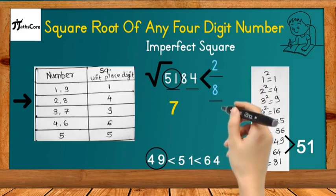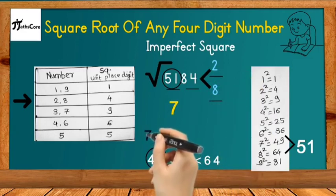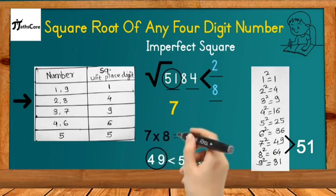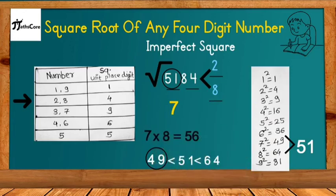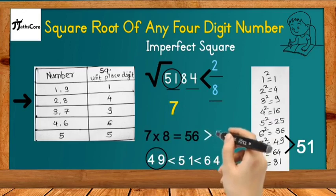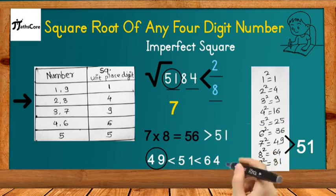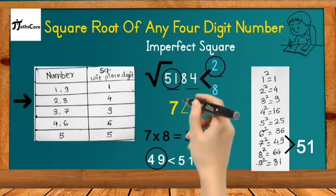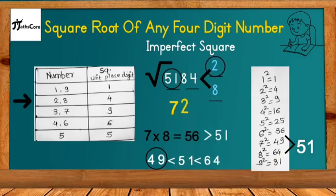Now we finalize between 2 and 8 for the unit place. Multiply 7 by its consecutive number 8: 7 × 8 = 56. Compare 56 with 51: since 56 > 51, meaning 51 < 56, we select the smaller number between 2 and 8, which is 2. So the final answer is 72 — the square root of 5184. In this way, you can find the square root of any four-digit number.